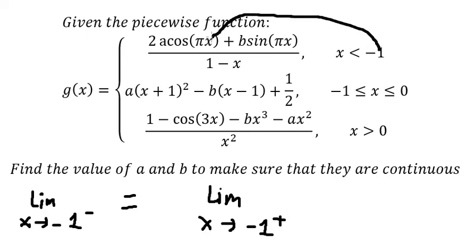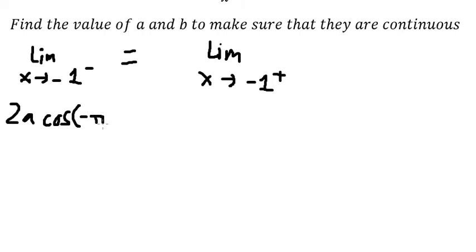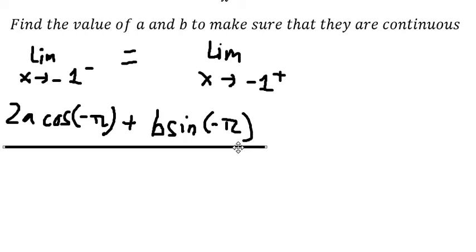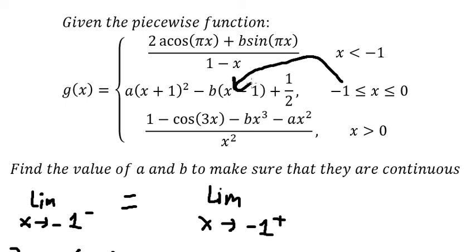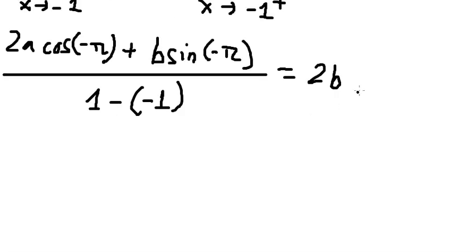Now we have this function. We can put negative one in here, so we will have 2a times cosine of negative b, plus b times sine of negative b, over one minus negative one. Substituting negative one gives: negative one plus positive one equals zero, and negative one minus negative one equals negative two. So negative times negative two gives 2b. And this part gives one over two.